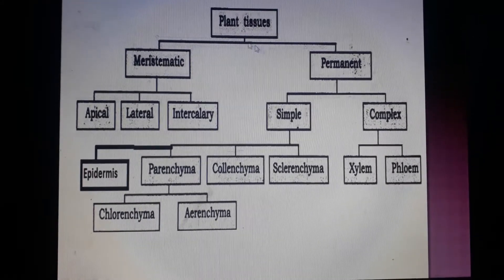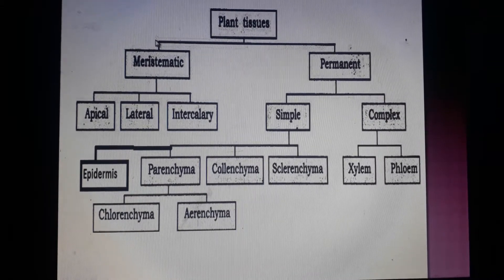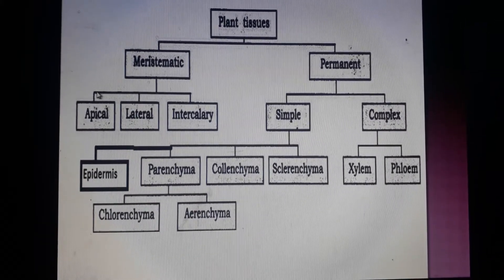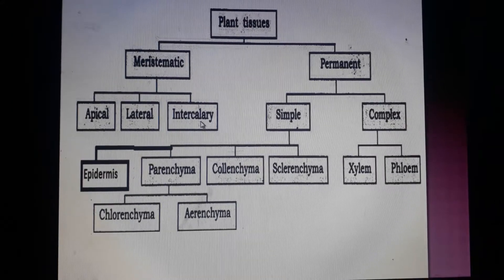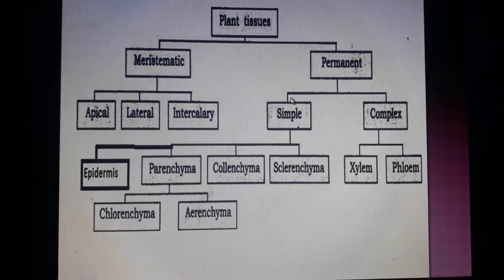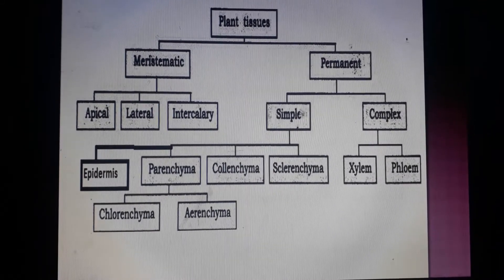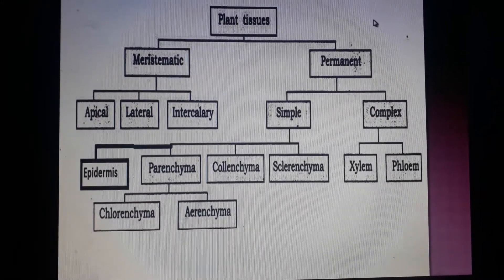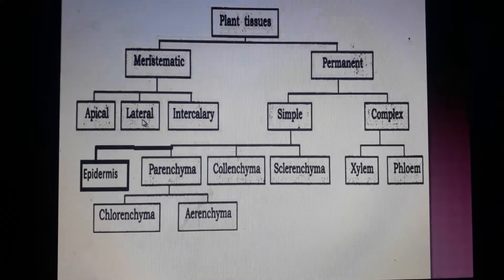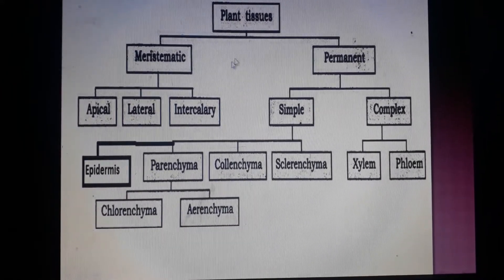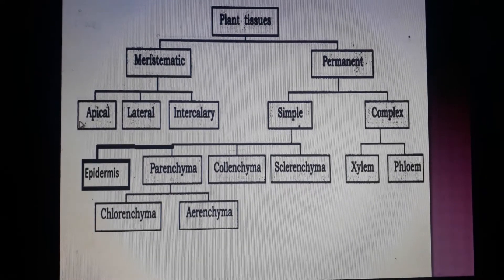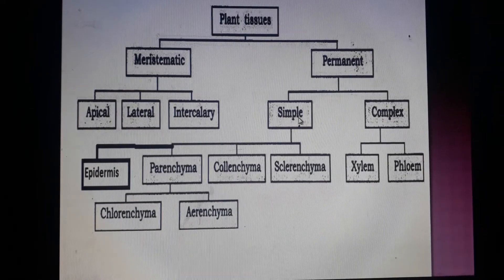So I hope till here you can learn. Plant tissues are of two types: meristematic and permanent. Meristematic tissues are of three types: apical meristem, lateral meristem, and intercalary meristem. Permanent tissues are of two types: simple and complex — simple permanent and complex permanent. I think for today it is enough to learn up to here about plant tissues.